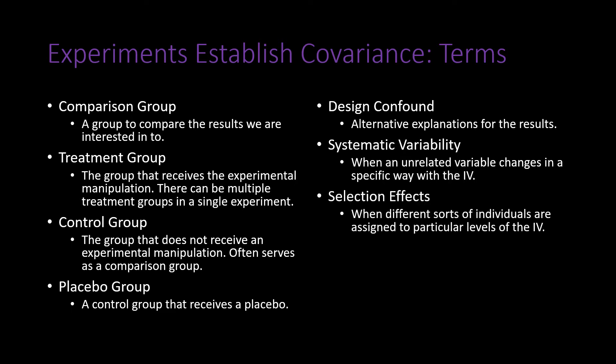A selection effect refers to the idea that groups are not created in equal ways. This can occur if people are not randomly assigned and the researcher's own biases influence who is assigned to which group. It is especially problematic when participants are allowed to choose their own groups, because underlying preferences might result in them selecting one group over another, and those preferences could be what causes the observed differences.